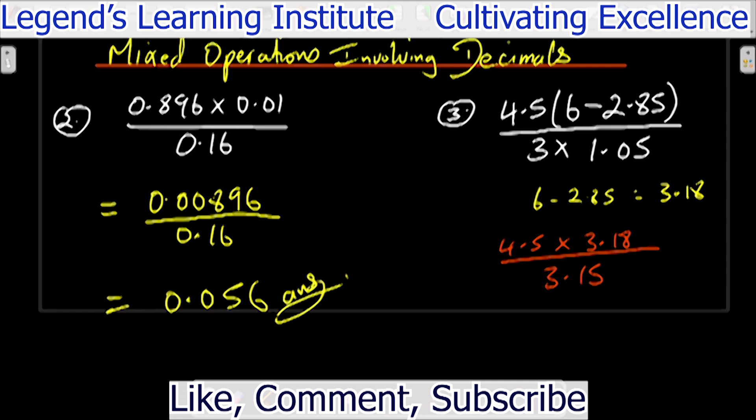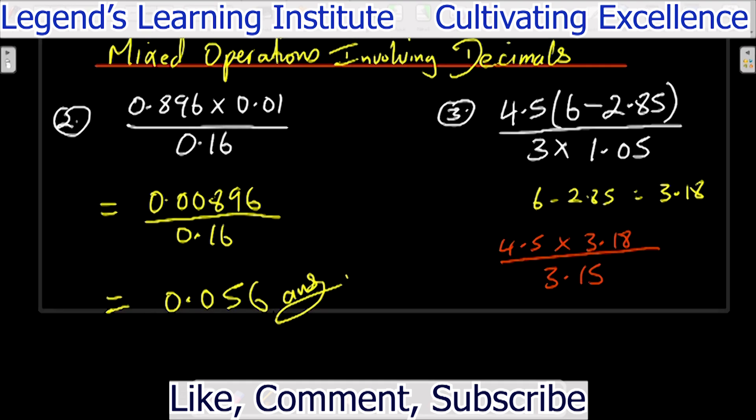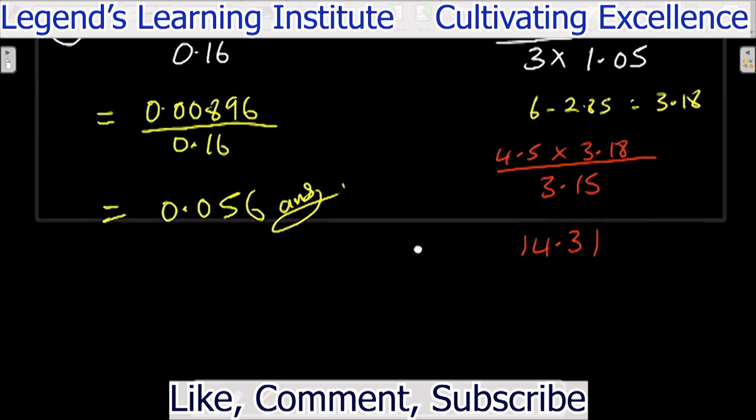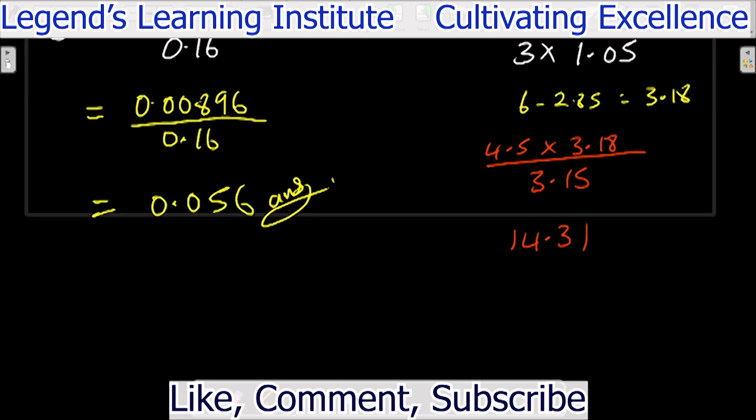So then we'll get 4.5 times 3.18. That's 14.31. Then we take that 14.31 and divide it by 3.15. That gives us 4.54285714286. So I'll round it off to two decimal places. That would be approximately equal to 4.54.